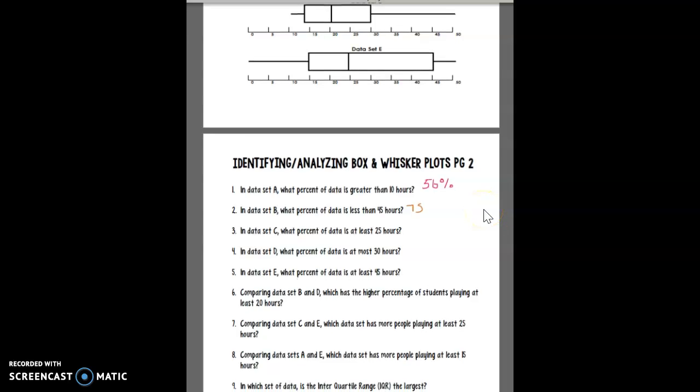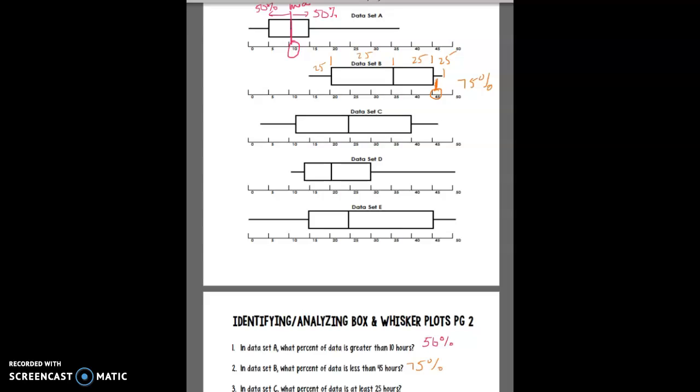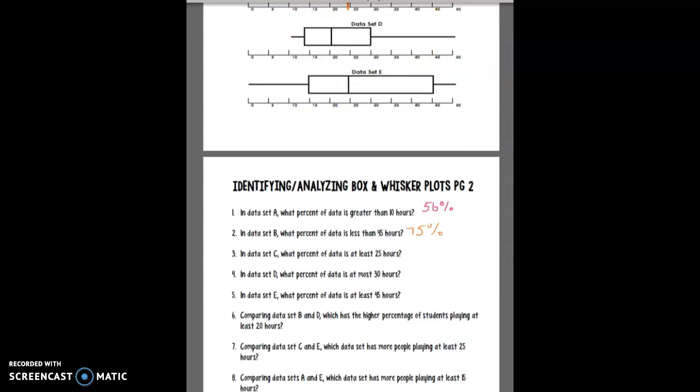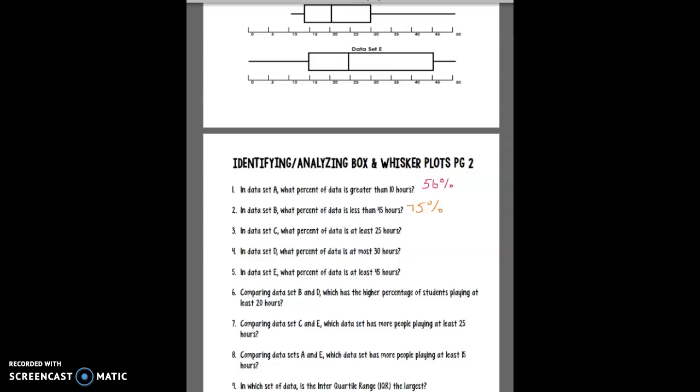Okay hopefully this is making sense. Data set C what percent of the data is less than 25 hours. So 25 is here. Okay that's the median. So that means we have 25% here and 25% here. So you can answer that one. And I think you can do the rest of this.